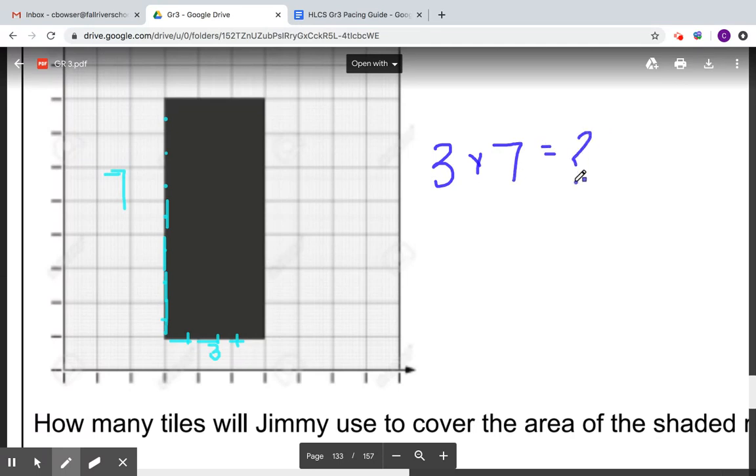And I can skip count by threes. I know my three song. And I know that there's three across. So three, six, nine, 12, 15, 18, 21. So three groups of seven, or seven groups of three, equals 21.